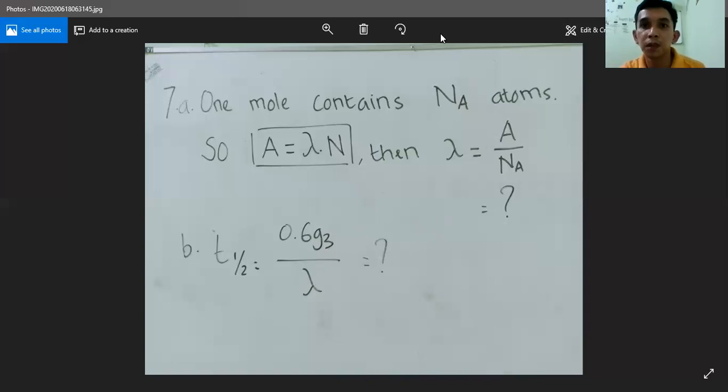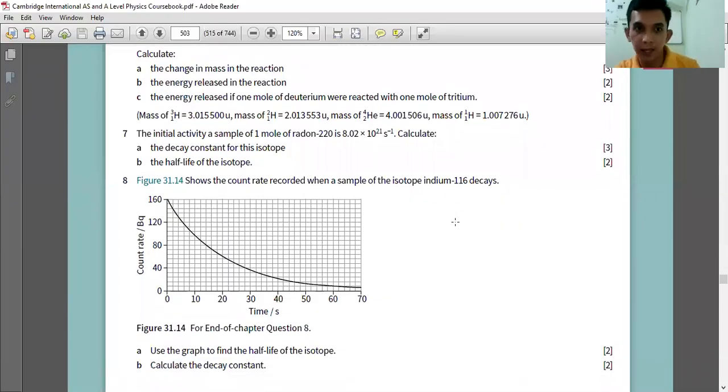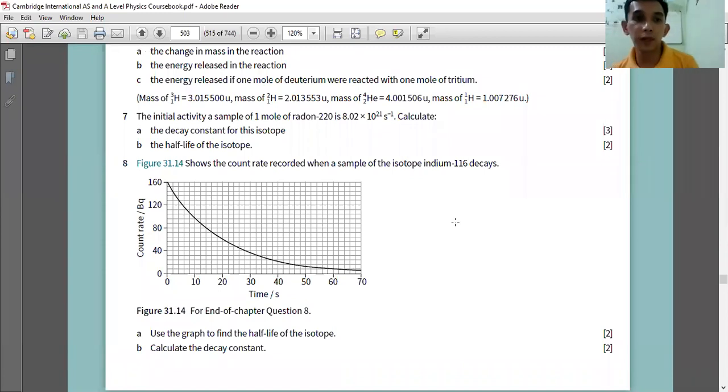Next, how to do number eight. Figure 31.14 shows the count rate recorded when a sample of the isotope indium-116 decays. Use the graph to find the half-life of the isotope and calculate the decay constant.